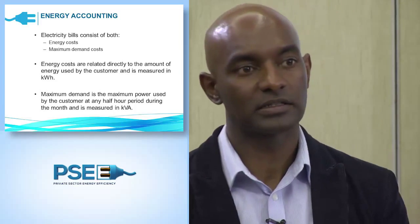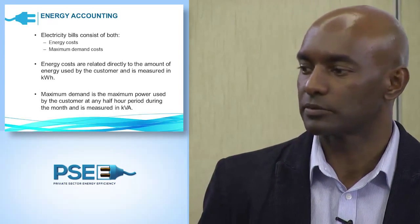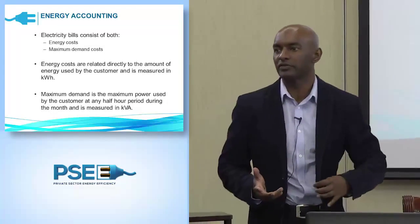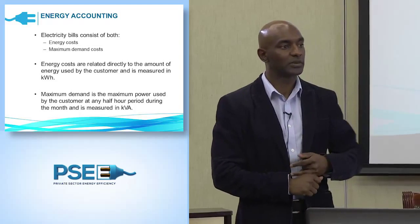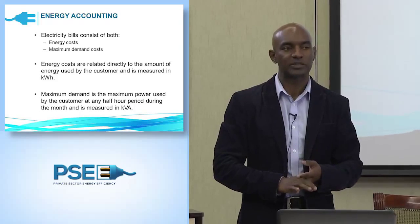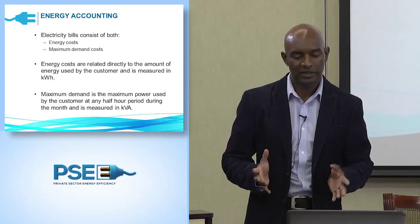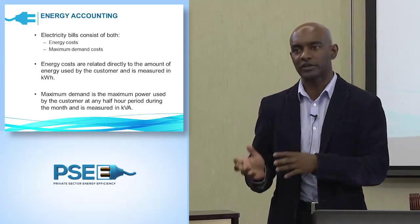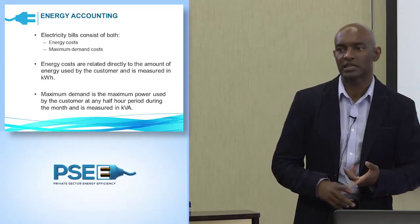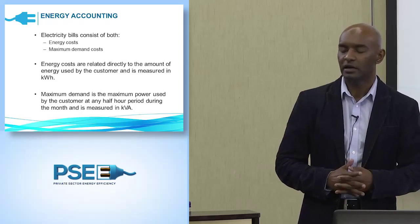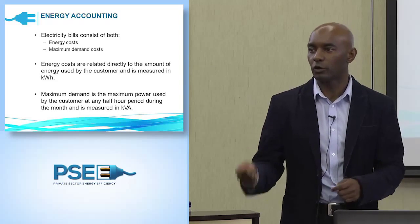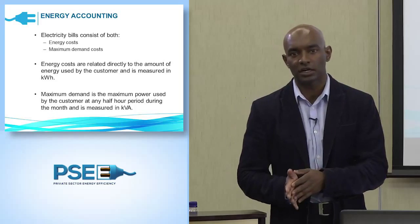I'm going to explain exactly what that means and how you can read your electricity usage. In most electricity accounts, typically for industrial customers or businesses, you get two types of charges: your energy charges and your maximum demand charges. Within energy charges, you get different types — your normal energy charge, maybe a flat rate, or if you're on a time-of-use tariff, it's peak, standard, and off-peak rates. You also get the rural electrification subsidy and the environmental levy.